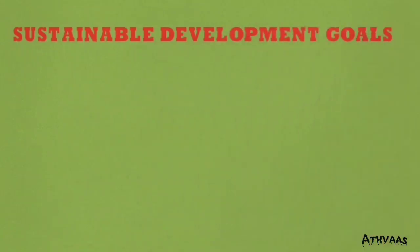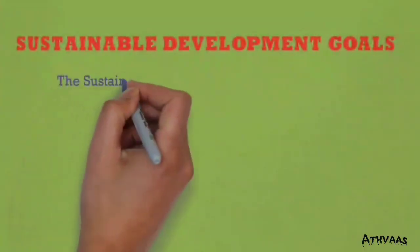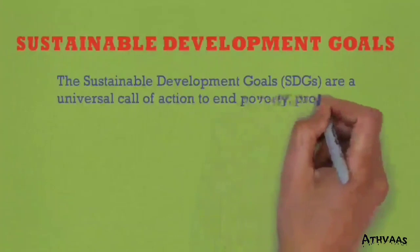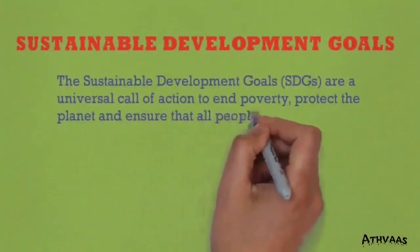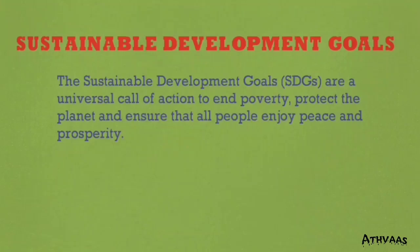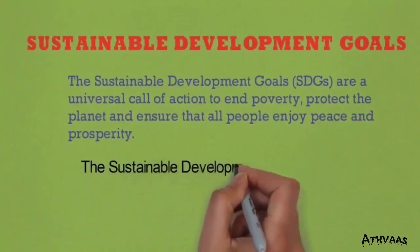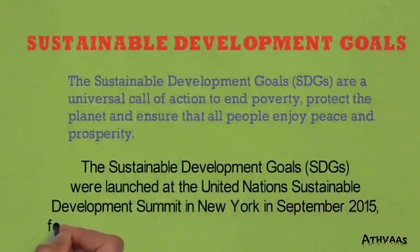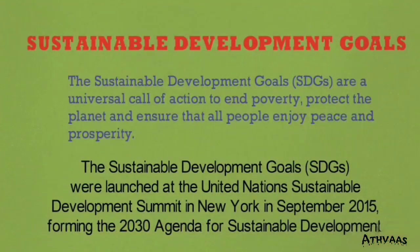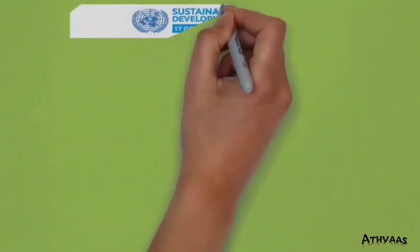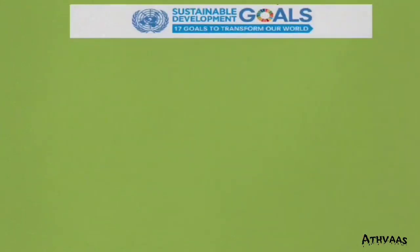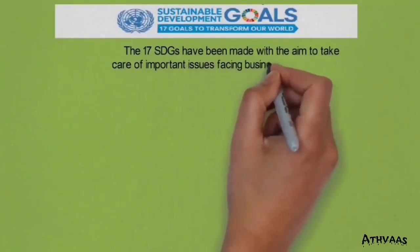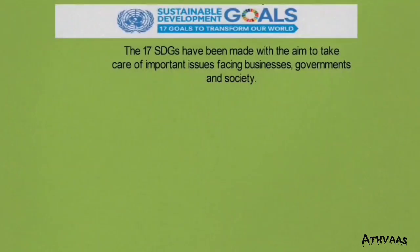Sustainable Development Goals (SDGs) are a universal call for the prosperity of human beings and for the environment, to reduce poverty and protect our planet. These SDGs were proposed and set by the United Nations in New York in September 2015 for setting new agendas for sustainable development. There are around 17 development goals for transforming the lives of millions of people around the world, which have affected businesses, governments, and citizens everywhere.